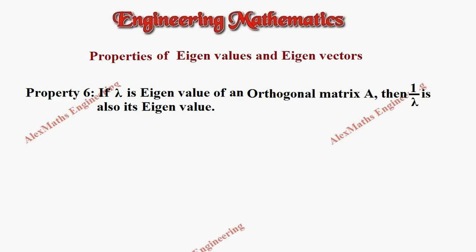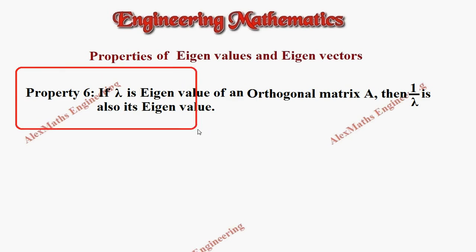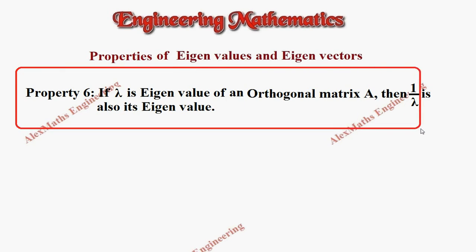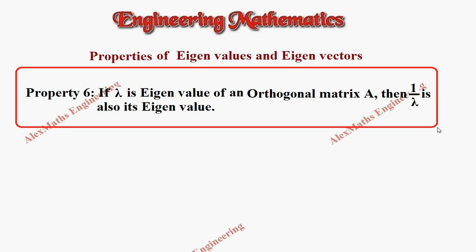Hi students, this is Alex here. In this video, we are going to prove the property that if lambda is an eigenvalue of an orthogonal matrix A, then 1 by lambda is also its eigenvalue. The definition of an orthogonal matrix A is that A transpose, that is A dash, and A inverse, both are equal.